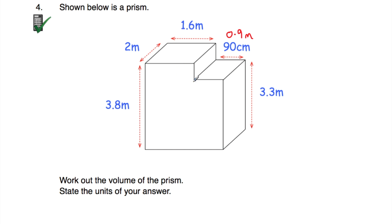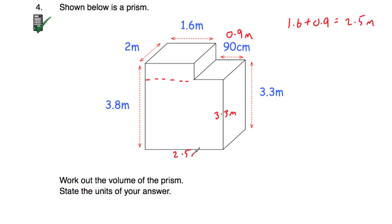So we're working in metres. Let's get the area of the front and then multiply by how long it is, which is 2 metres. I'm going to chop it this way. For this bottom part, the height is 3.3 metres. Looking at the top, we have 1.6 plus 0.9, which is equal to 2.5 metres wide. So 3.3 multiplied by 2.5 is equal to 8.25 square metres — that's the area of this part of the cross-section.